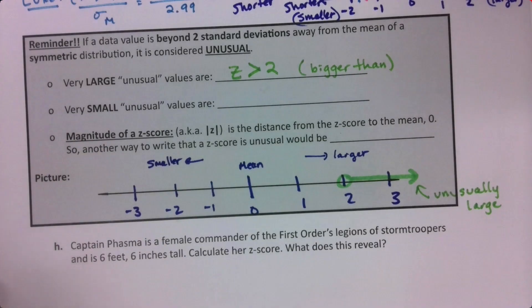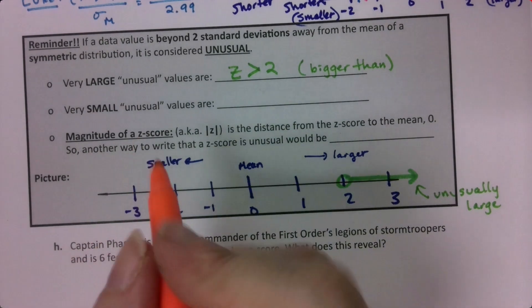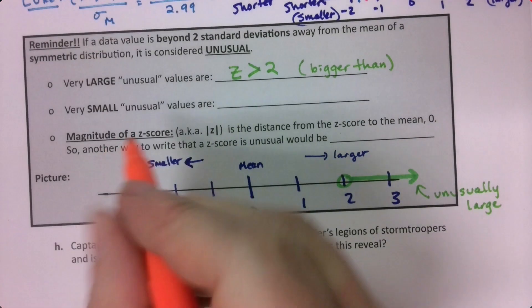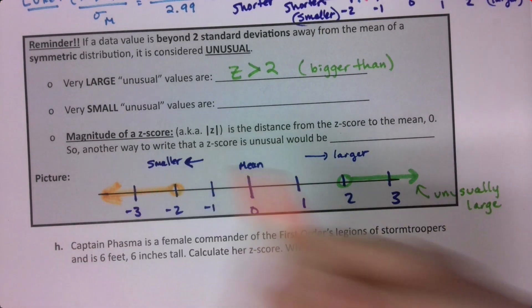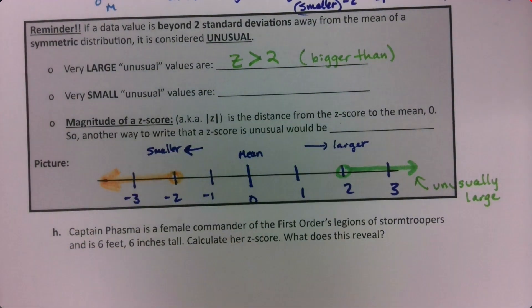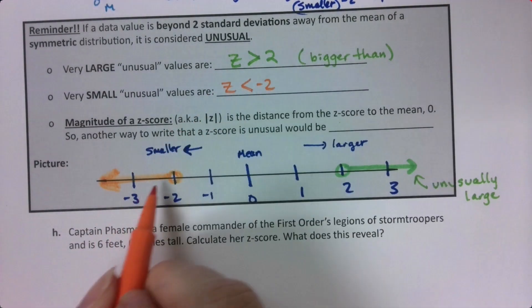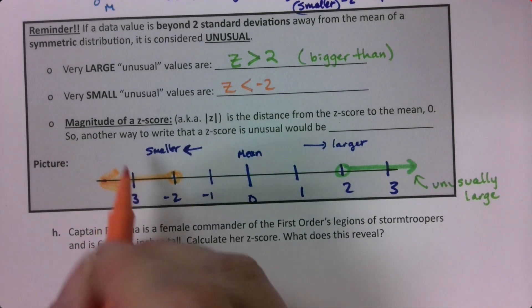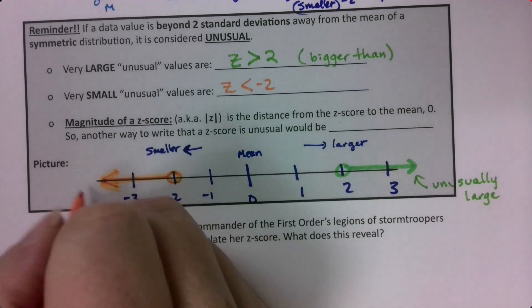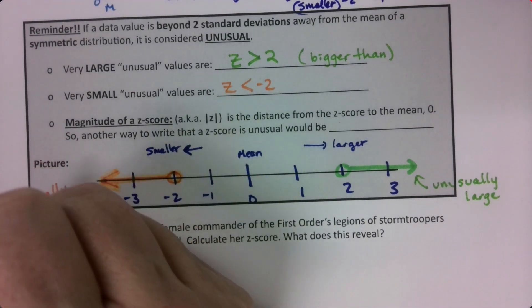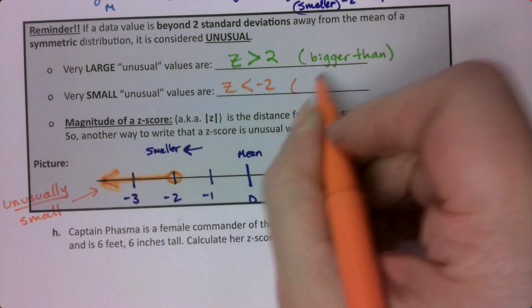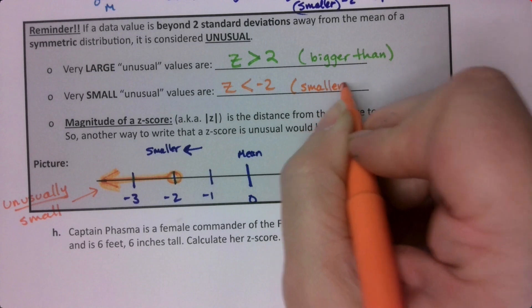Where are the unusually short values? They're over on the other side. Anything that is less than negative two, not negative two itself, but less than negative two, those are the unusually short values. So if your Z is less than negative two, like negative 2.2, negative 2.5, negative 3.3, that's unusually short or unusually small.